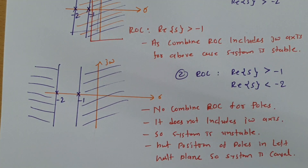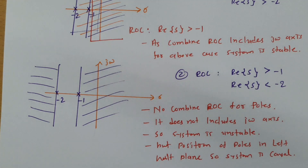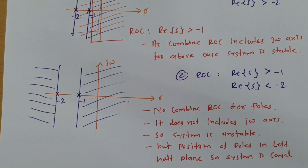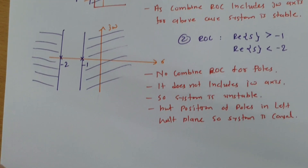I hope you have understood this. Every time you have a transfer function, the position of the poles directly determines whether the system is causal or not. If the ROC is not given, then based on pole position we can also say stability. But if the ROC is given, we need to check whether the combine ROC includes the imaginary axis. If it does, the system is stable.